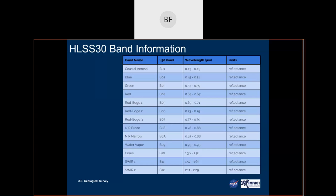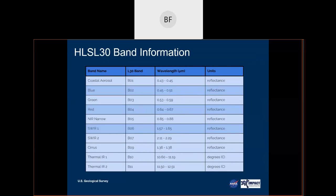For HLS-L30, we retain all Landsat bands except band 8, which is the pan band — we do not carry the pan band. We do carry the two thermal bands, reprocessed to 30-meter resolution, though they are not part of the harmonized product since Sentinel doesn't have a comparable thermal IR band. The bulk of HLS applications for building a denser time series falls within the visible to shortwave IR portion of the electromagnetic spectrum.